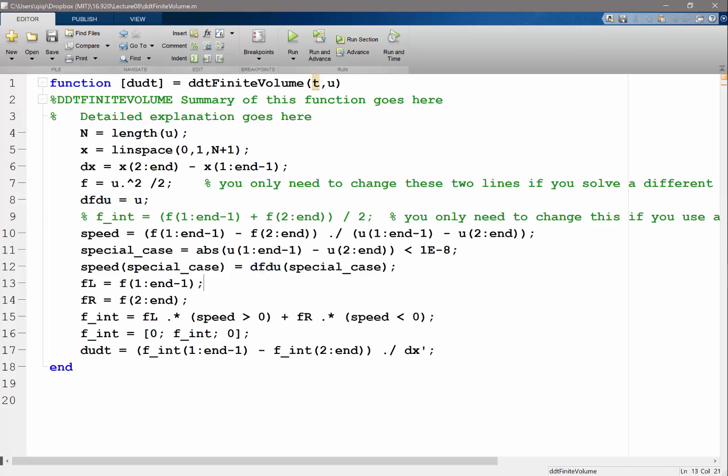Alright, and then we compute the flux evaluated at the left cell and the flux evaluated at the right cell and we want to combine them depending on if speed is greater or less than zero. But I missed the case where speed is actually equal to zero.